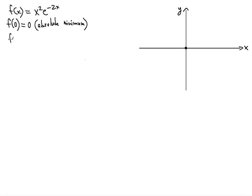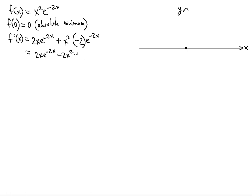Let's actually take the derivative using the product rule. First, we differentiate x squared while leaving e to the negative 2x alone, giving us 2x · e^(−2x). Then we leave x squared alone and differentiate e to the negative 2x, which gives negative 2 · e^(−2x). That gives us 2x · e^(−2x) minus 2x² · e^(−2x).